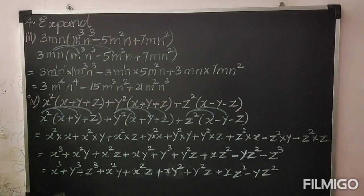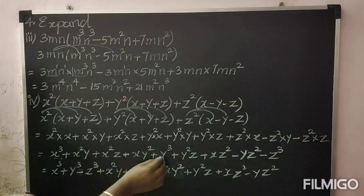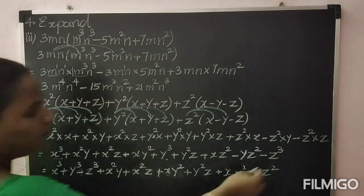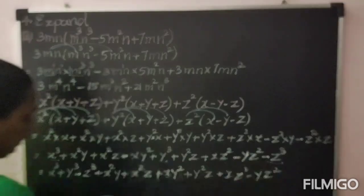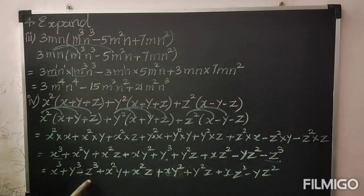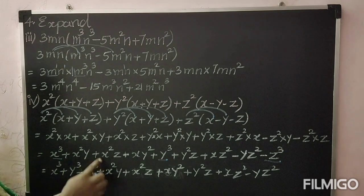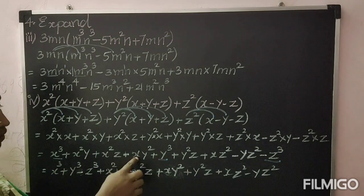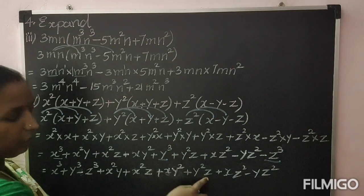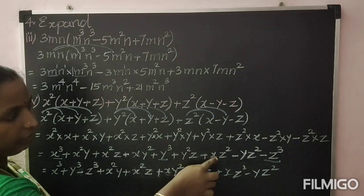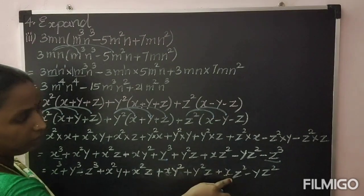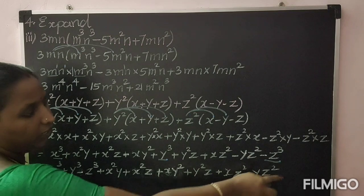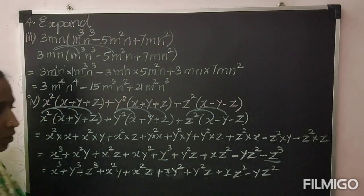So write in order: x² into x gives x cube, y² into y gives y cube, z² into z gives z cube — so x³ + y³ − z³. Then plus x²y, plus x²z, plus xy², plus y²z, plus xz² minus yz².